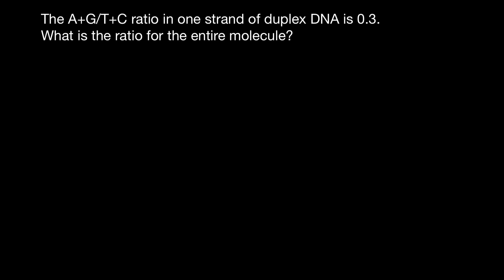Hello, and welcome to Nikolai's genetics lessons. Today's problem is: the ratio of adenines and guanines to thymines and cytosines in one strand of the duplex DNA is 0.3. What is the ratio for the entire molecule?